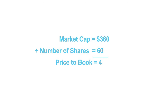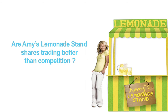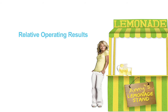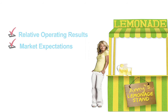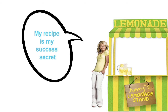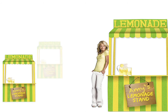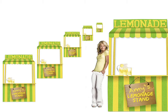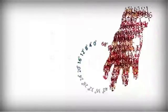Why is the market valuing Amy's business at a premium — in fact, at four times its invested capital? Let's look at other lemonade stand businesses in the market to see what premium the market is placing on them. Is the premium for Amy's stand higher or lower compared to its peers, and if so, why? It could be because of better or worse relative operating results, because of the market's expectations for growth, or both. Maybe Amy has a secret recipe which lets her command a premium price, or she may have successfully franchised her businesses and the market expects her to do this across the country. The answers to these questions are actually in the numbers — you just need to know how to interpret them.